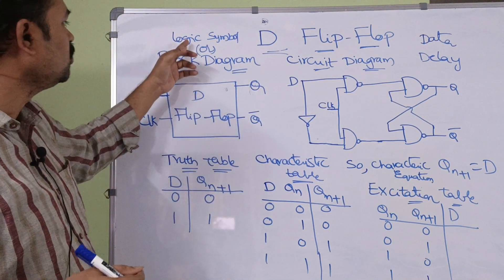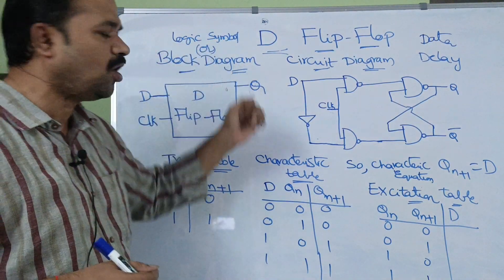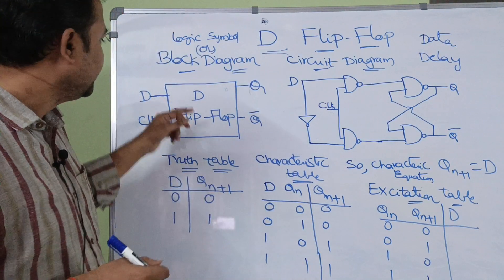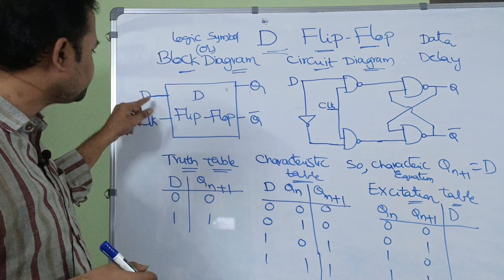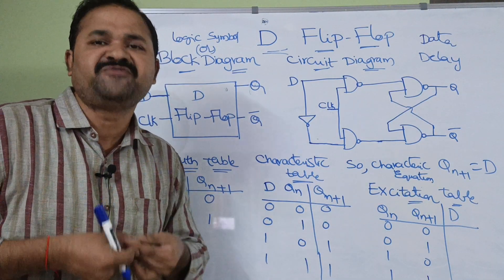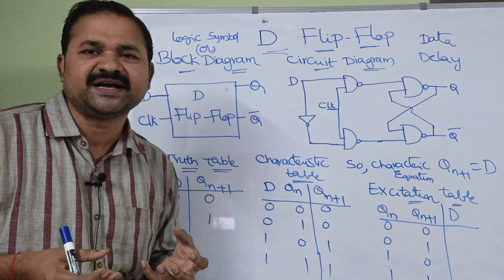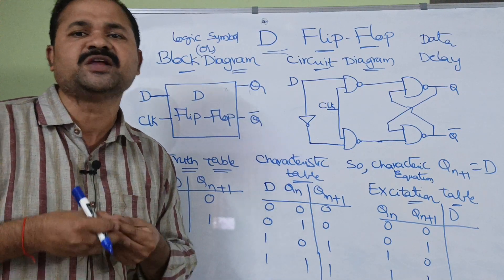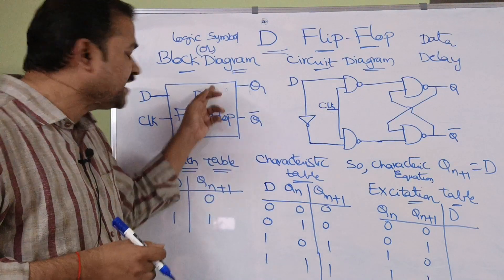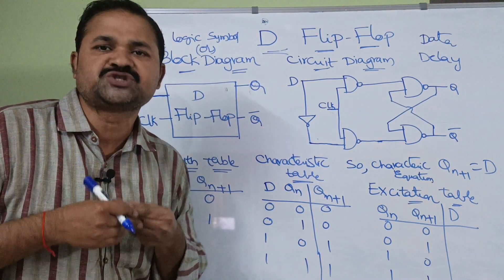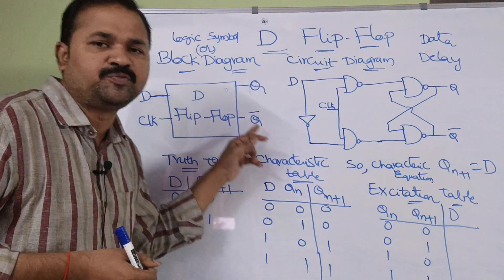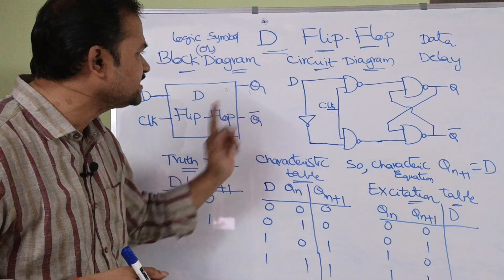First let us see about the logic symbol or block diagram of the D flip-flop. A D flip-flop will accept one input, that is D. Since it is a flip-flop, we must apply a clock pulse. Any flip-flop will produce two outputs: the first output is Q, and the second output is the complement of Q, i.e. Q bar.